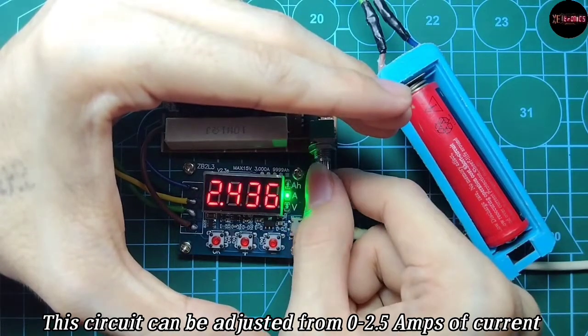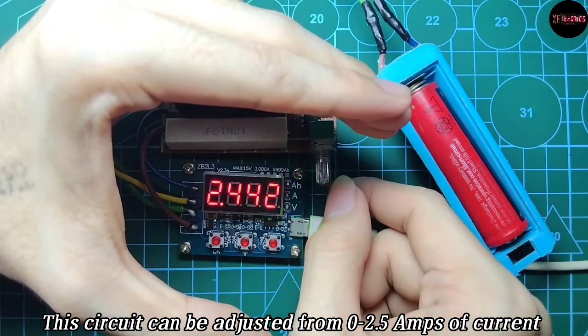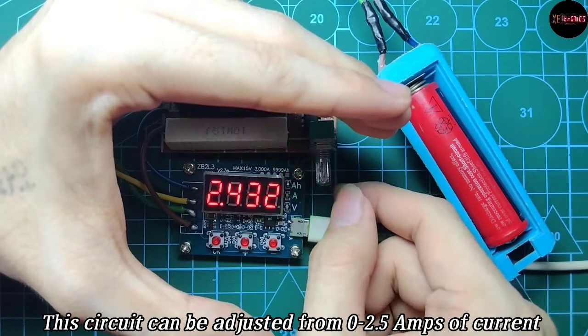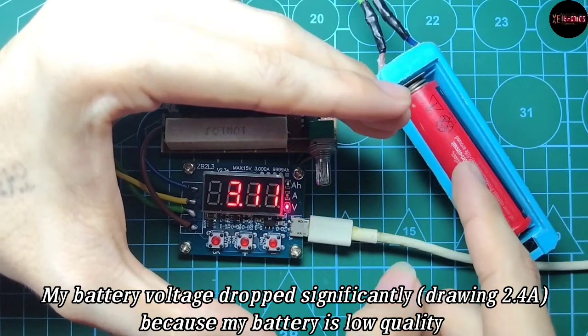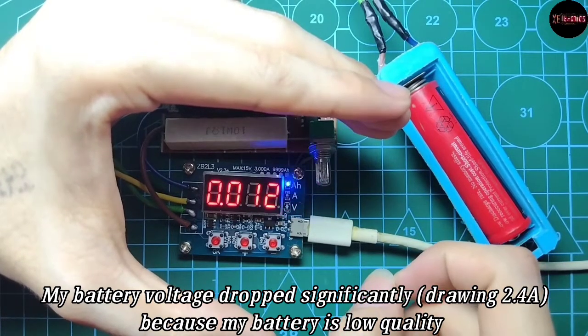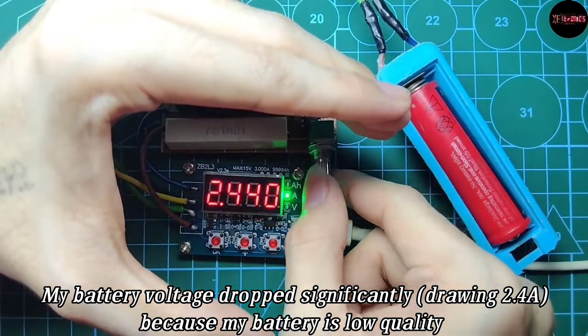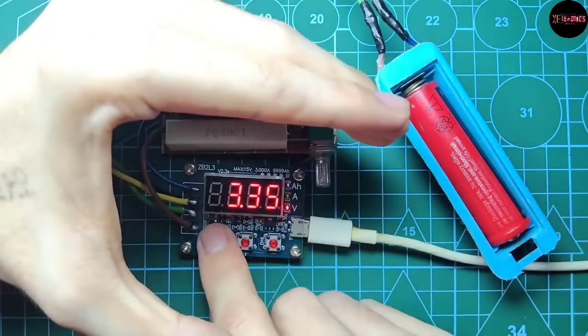This circuit can be adjusted from zero up to 2.5 amps of current. The battery voltage dropped a lot here because this battery is a low quality one, but the circuit works.